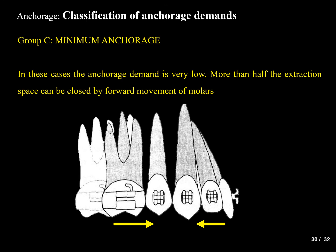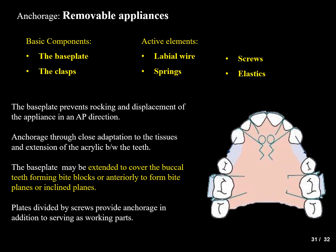Group C is minimum anchorage, where the anchorage demand is very low. More than half of the extraction space can be closed by forward movement of the molars. This is opposite to maximum anchorage — the anterior teeth move less while the molar teeth move a greater distance.